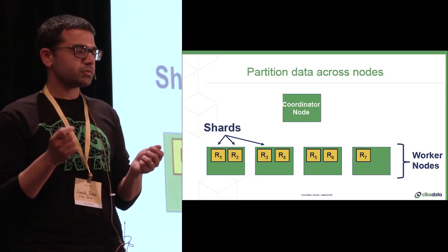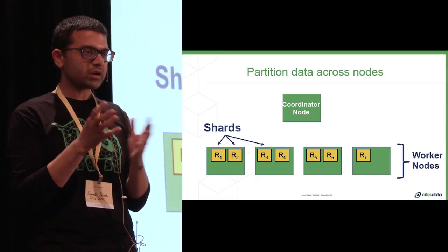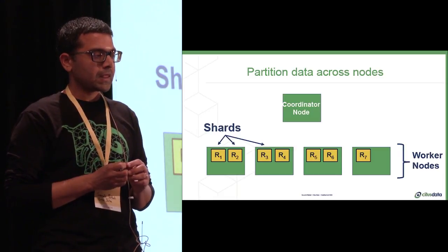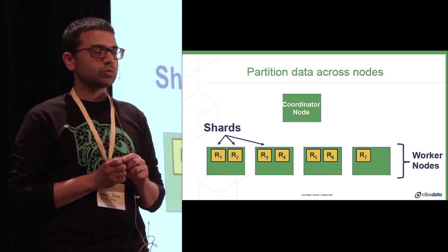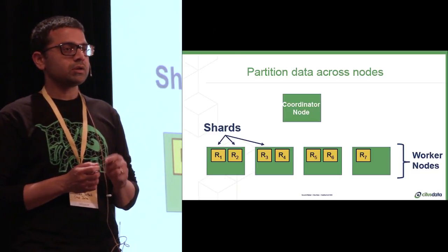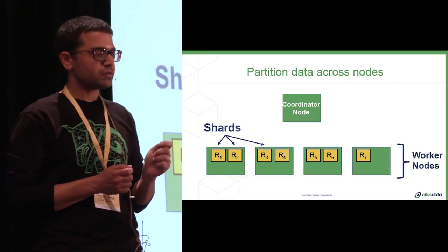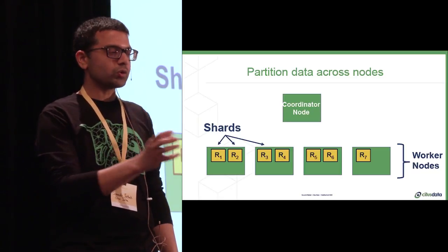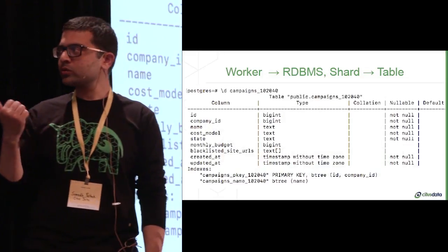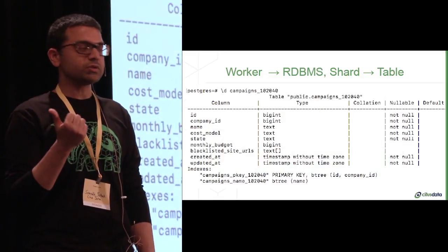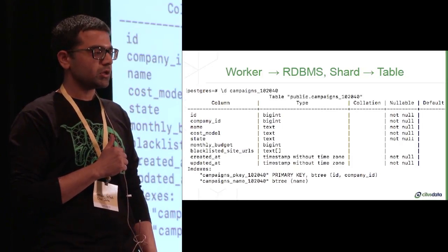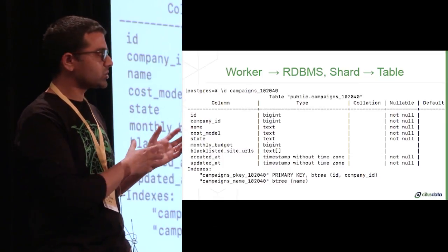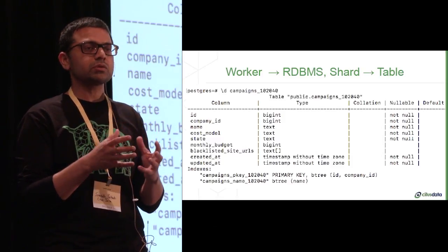So how do we take a large table and then split it across nodes? Well, just break up the data and store it in chunks, right? But what about indexes or column defaults or constraints? One of the key early insights we had was to use the relational database as a building block itself. In this case, each node here is a relational database itself. We can then split a larger table into smaller chunks where each chunk is a table and can have its own indexes and constraints. In fact, when you log into a worker node, you can just connect to the database instance on that node and then look at some of those shards or partitions. In this case, we're looking at the campaigns table and it's a shard, which is 102040. But you can see that each shard is just a mini version of the original table, which has its own relational semantics.